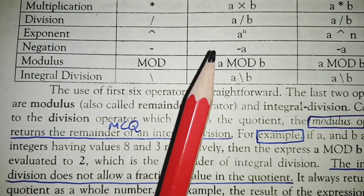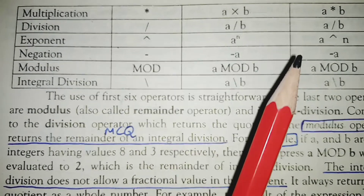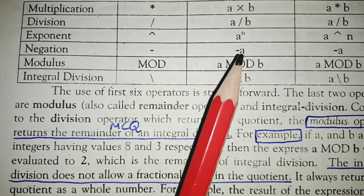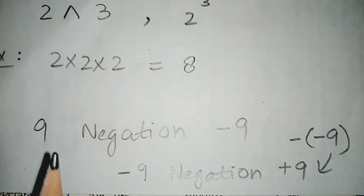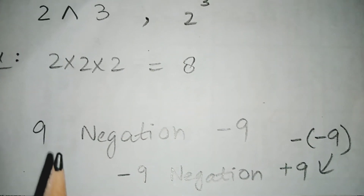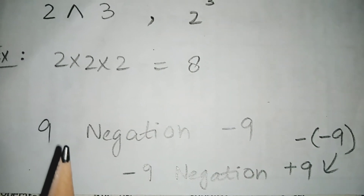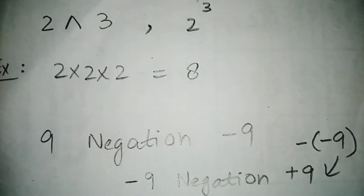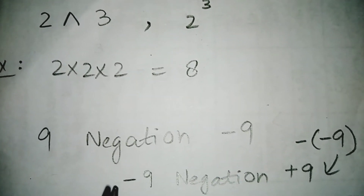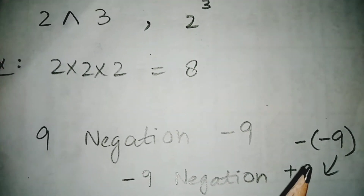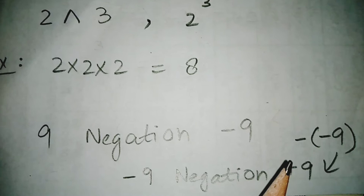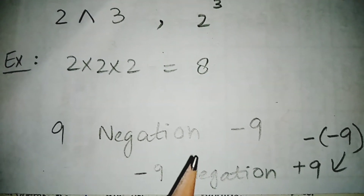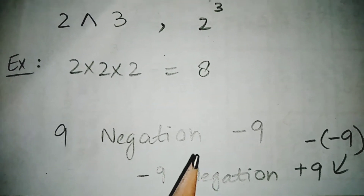Negation means to negate a data value. The BASIC expression is -A. For example, if there is a data value of 9, then negation will be -9. And if there is a data value of -9, then negation will be +9. Negation means the sign of the data value is changing.